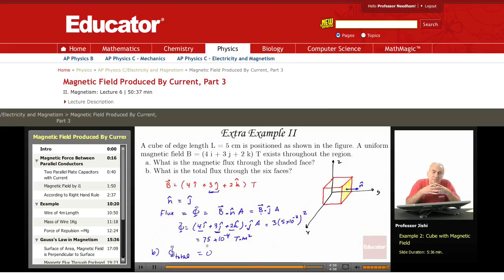This is what you call Gauss's law of magnetism, or Gauss's law for magnetism: that the magnetic flux through any closed surface is zero. So through the six faces, the whole cube, which is a closed surface, it's zero.